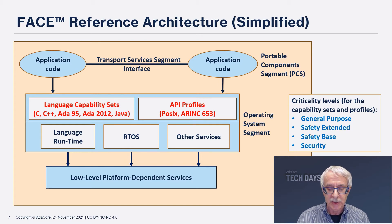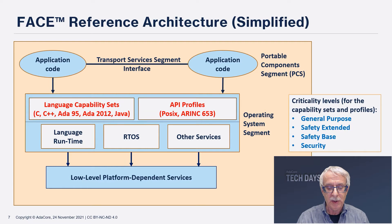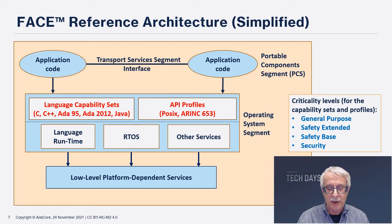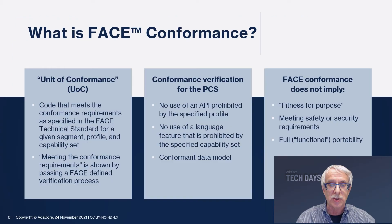The technical standard also defines analogous restricted subsets of language features, known as capability sets, for C, C++, Ada 95, Ada 2012, and Java. Since languages like C++, Ada, and Java realize runtime functionality through standard language syntax rather than API calls, a PCS component may need to communicate with other PCS components. This needs to be done through an API defined in the transport services segment, which supports various styles of synchronous and asynchronous communication. This API is defined in IDL, so it can be mapped to bindings in the programming languages used by the PCS components.